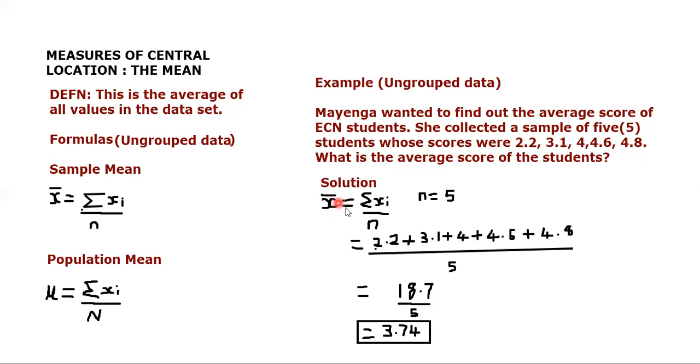The solution is here. We are talking about the sample mean. It's very important to first identify what we are trying to talk about. In this case, X bar is equal to the summation of Xi over n, small letter n.